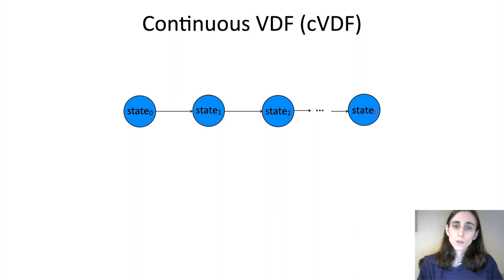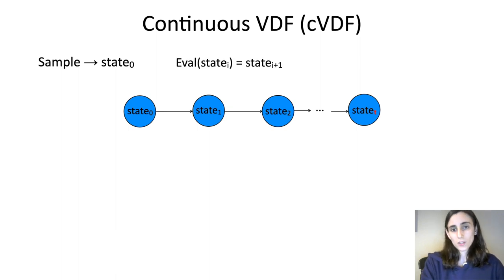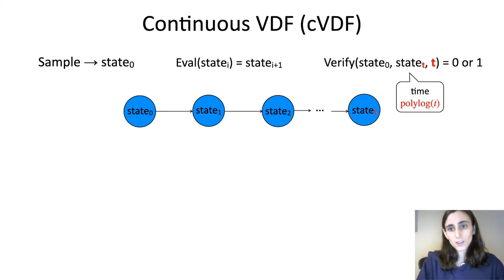More formally, a continuous VDF is the following. It has a sample algorithm which samples this first state, state 0. It has an evaluation algorithm which is deterministic and allows you to transition from one state to the next. And it has a verification algorithm, where for any t, the t-th state can be verified. And in particular, this verification is extremely efficient. It only takes time poly log t, and this is for any t.